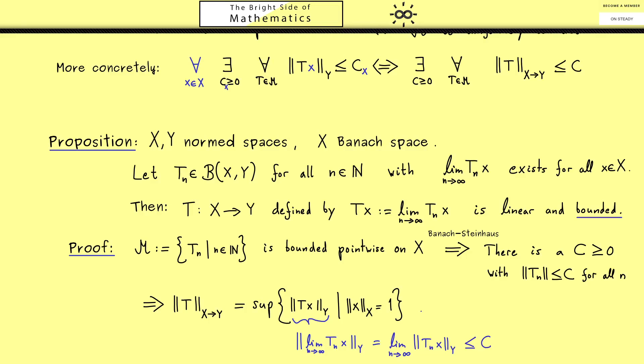The operator norm of T, we don't know what the exact value is, but we know it's less or equal than C. Hence the operator T is bounded.